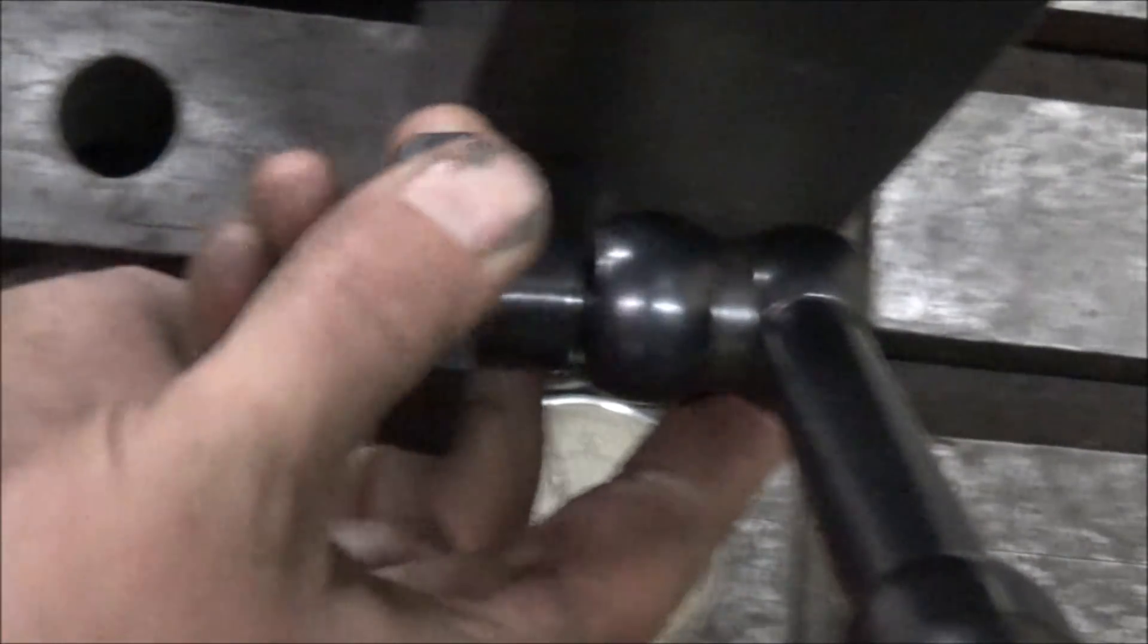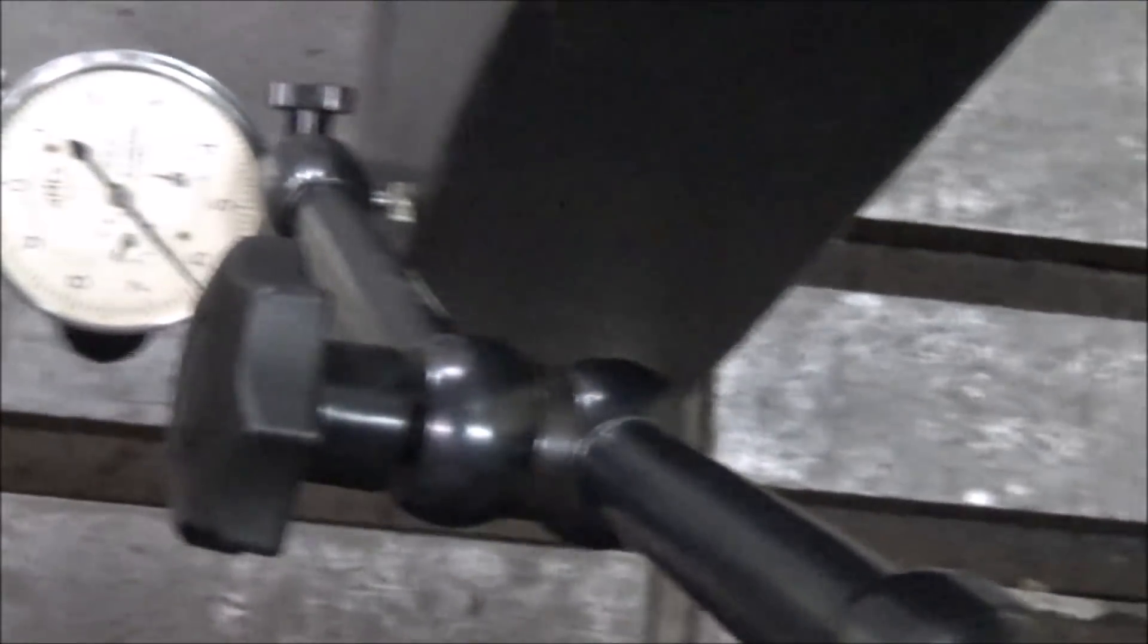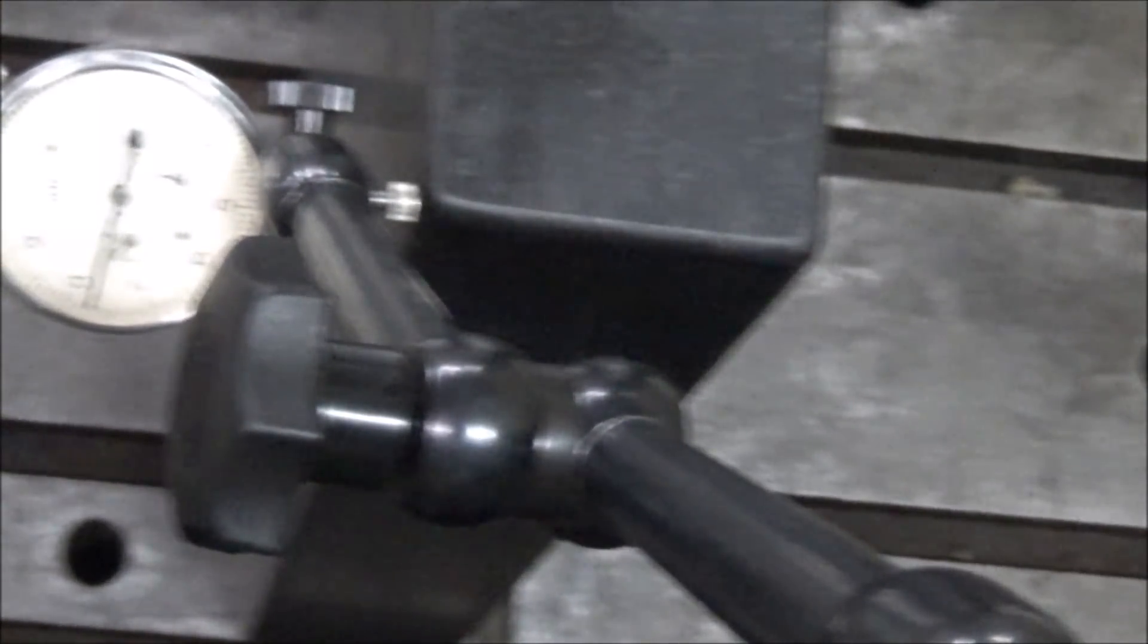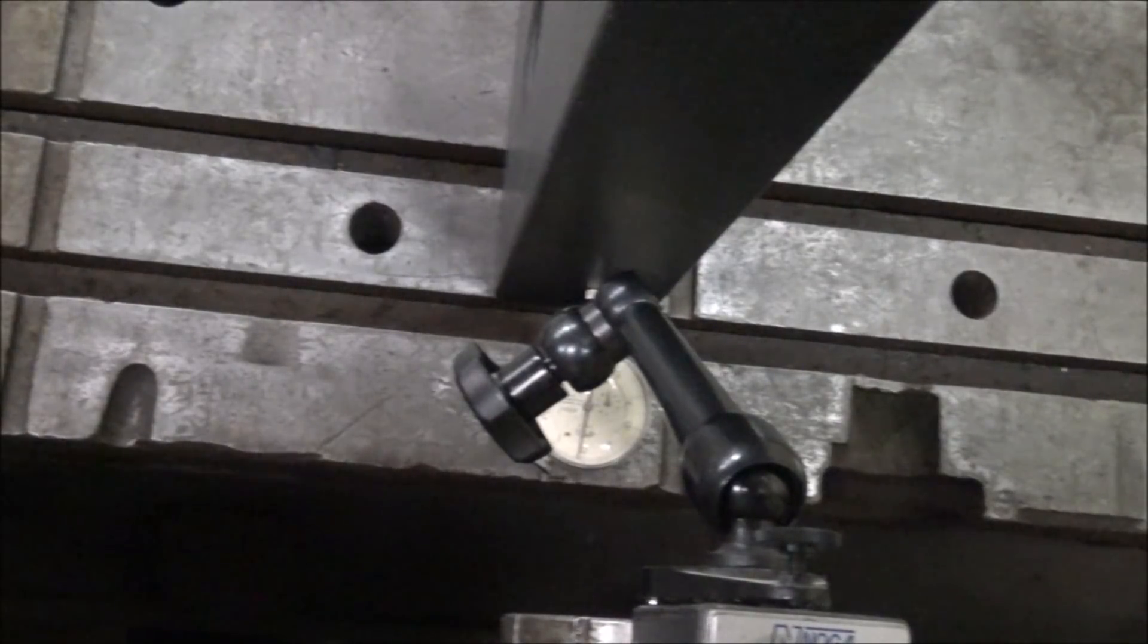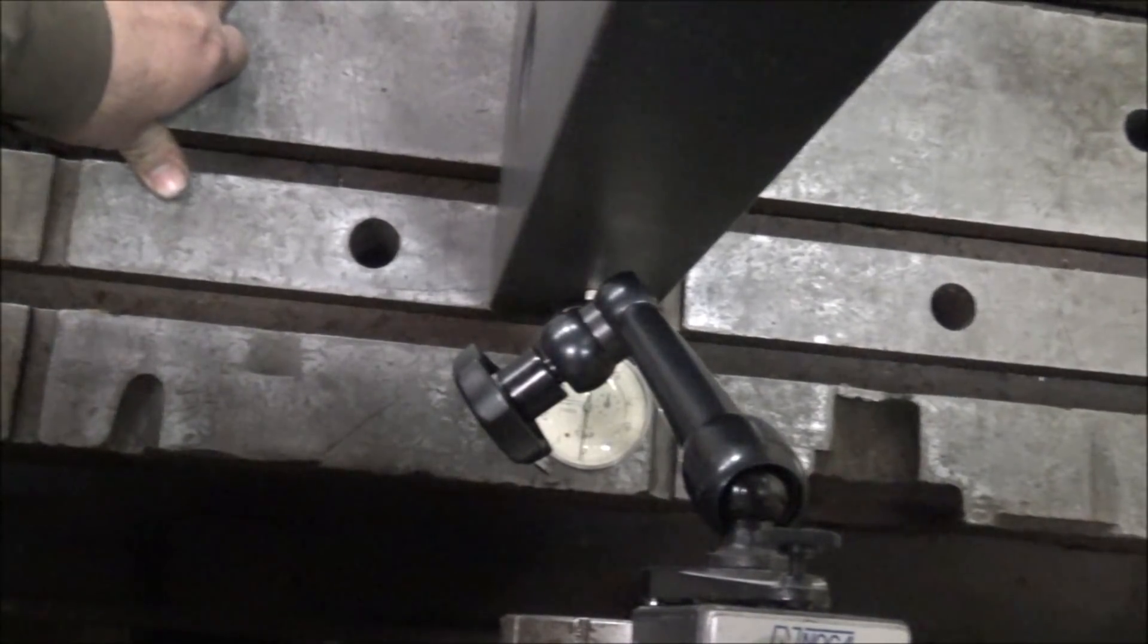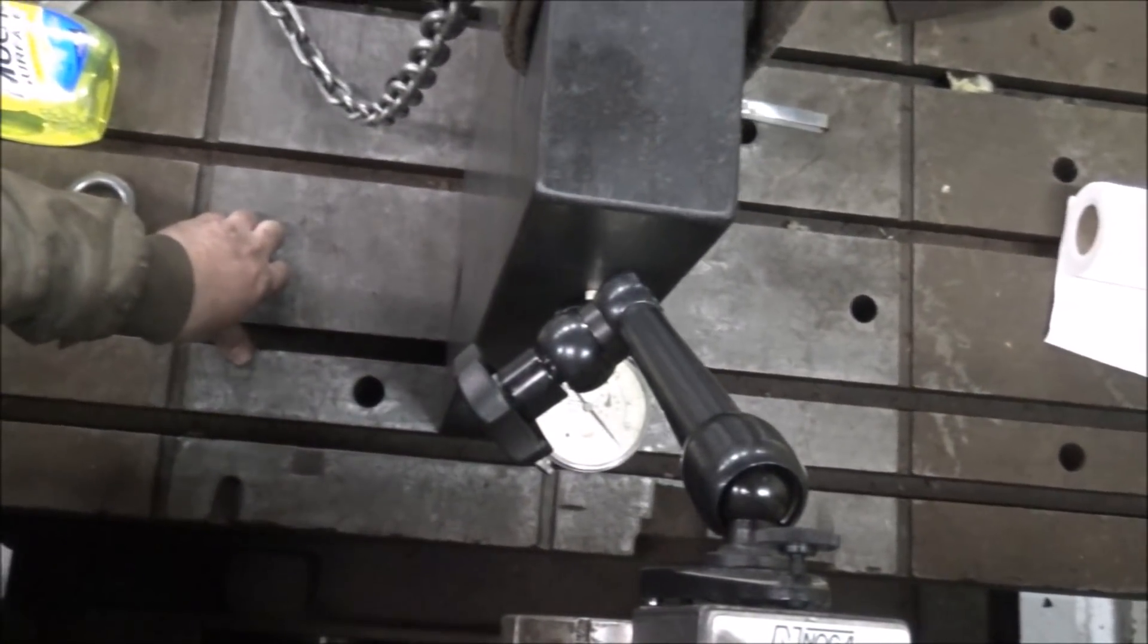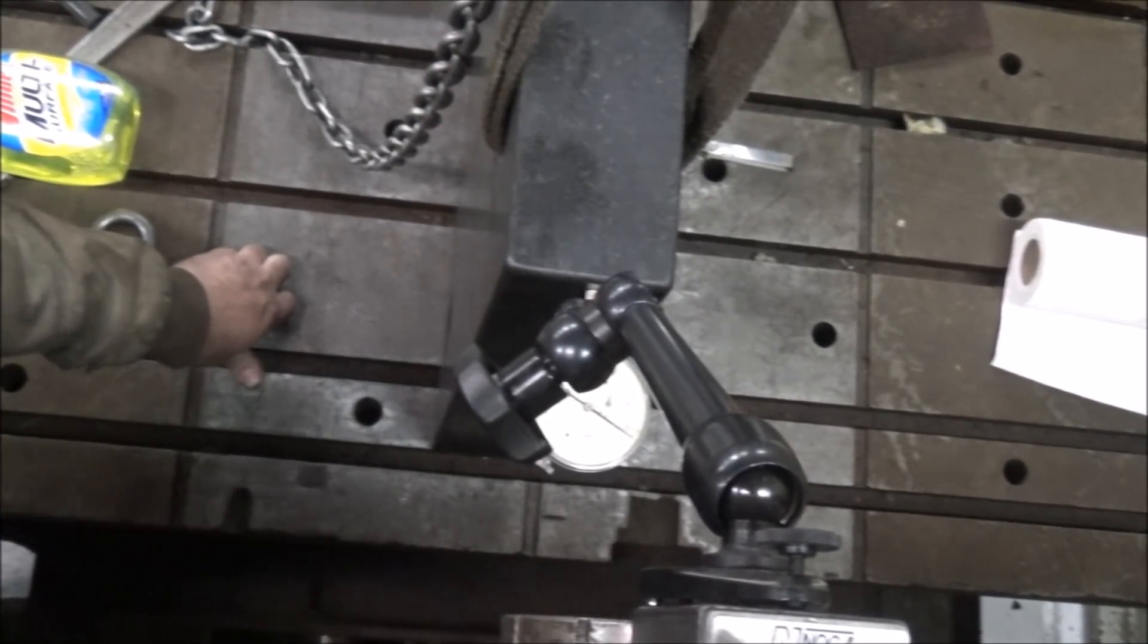Alright, at two thou out over distance now it looks like, on that axis. So we're looking for less than a thou fall off, pretty much. It fell off almost two, so I guess I'll go a little more.